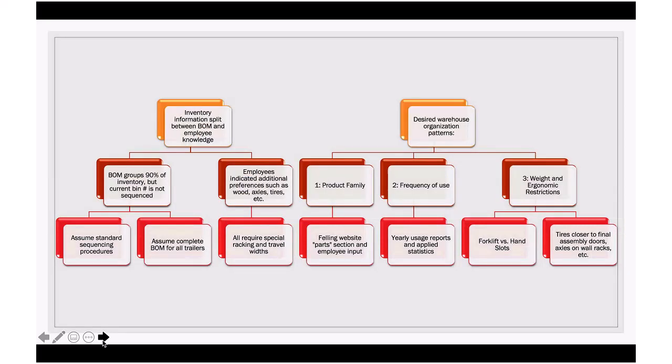The inventory they have right now is split between the bill of material and warehouse employee knowledge. Employees indicated additional preferences on specific materials like wood and tires. The desired warehouse organization is to group product families, work with frequency of use, and finally weight and economic restrictions.